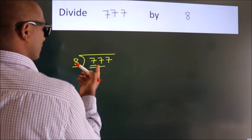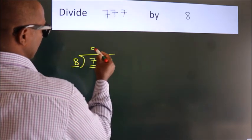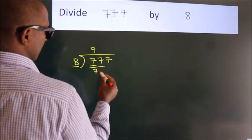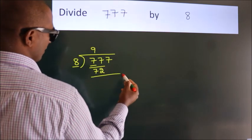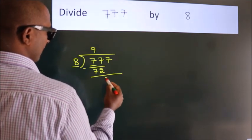A number close to 77 in the 8 table is 8 nines, 72. Now we should subtract. We get 5.